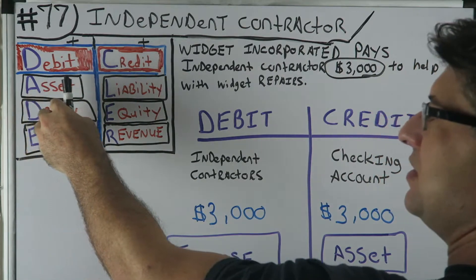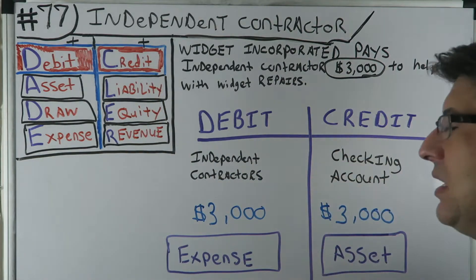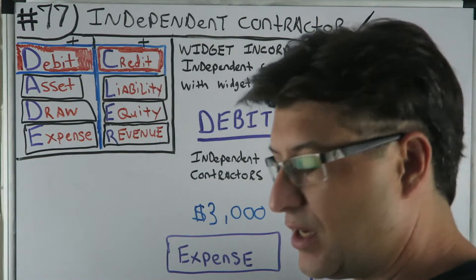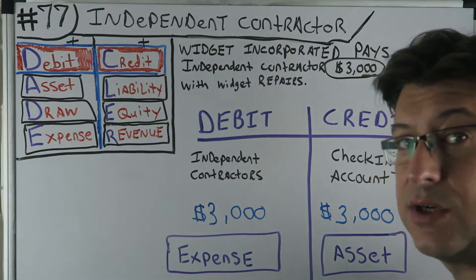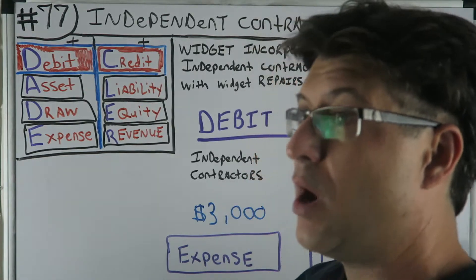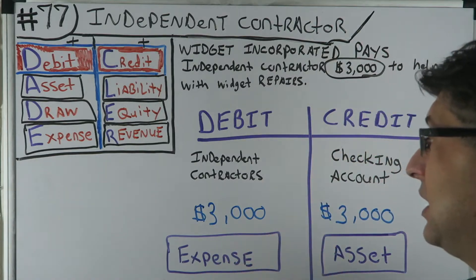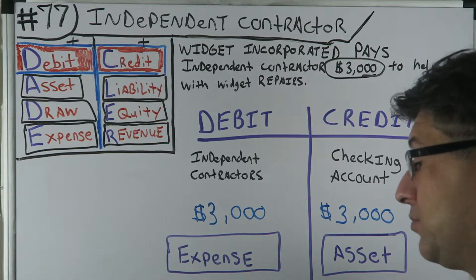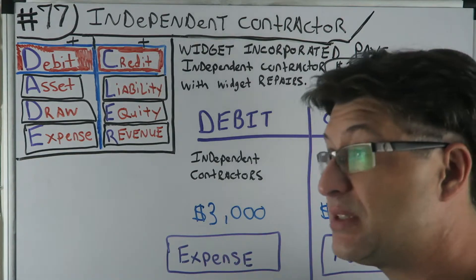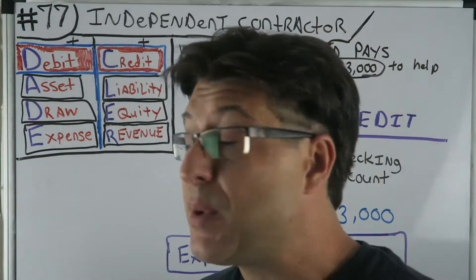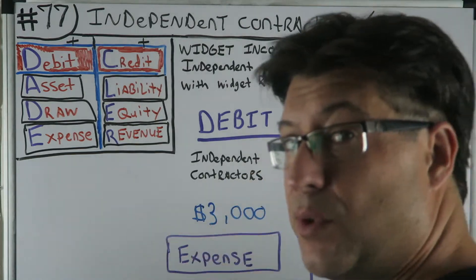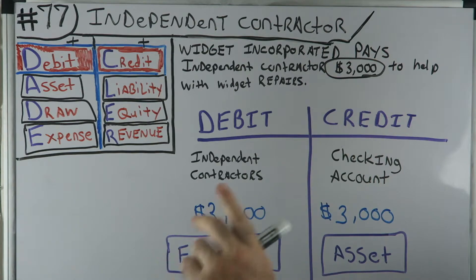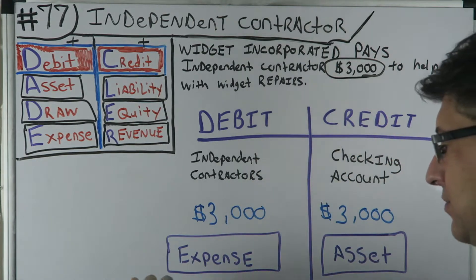The checking account is an asset. If it's leaving the account, that's a credit. So we have a credit for three thousand dollars in our checking account. What's our debit going to be? Independent contractor — three thousand dollars. Why is three thousand dollars leaving your checking account? Because we're paying an independent contractor three thousand dollars in the ordinary course of business, in the hope of getting money back — that's an expense. Debit independent contractors $3,000, credit checking account $3,000.